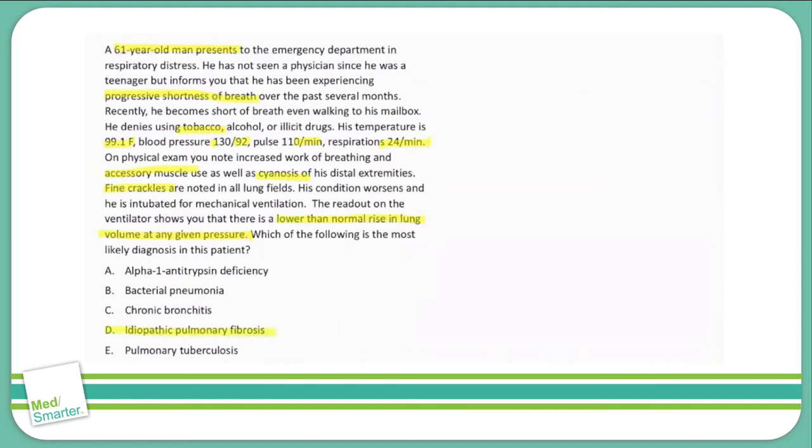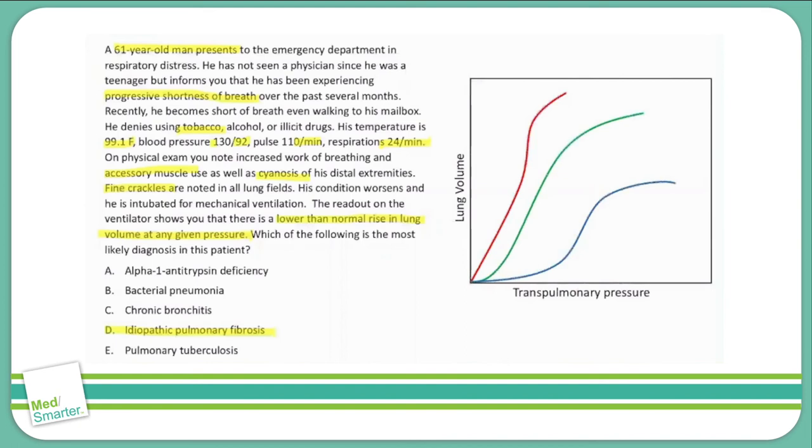So now that we know the answer is D, idiopathic pulmonary fibrosis, let's do a quick review on what lung compliance is. If you take a look at these graphs here, you'll see that you have transpulmonary pressure on the x-axis and lung volume on the y-axis. And these curves here represent compliance of different types of lungs. If we look at the green one here, we'll call that a normal compliance.